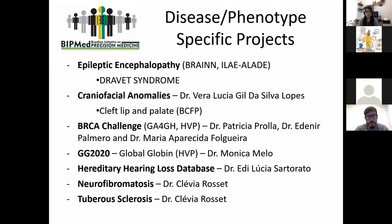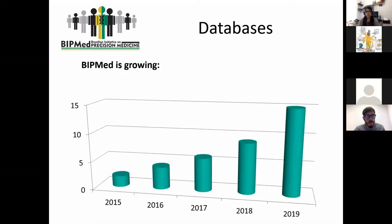A side of the project growing very fast is disease-specific datasets. Today we have cases of epilepsy, craniofacial anomalies, breast cancer, HIV, hereditary hearing loss, neurofibromatosis, and tuberous sclerosis. Researchers contact us not only to use the infrastructure but also to increase visibility of their datasets.